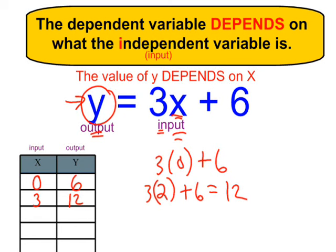Let's do one more. Let's give x a value of 6. So our input is going to be 6. 3 times 6 is 18, plus 6 is 24. So if x is 6, the dependent variable y will be 24.